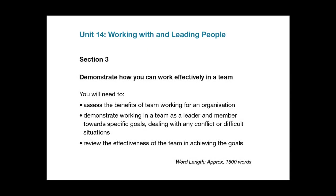Section three is looking at teams and team working. Bullet point one is fairly straightforward. Bullet point two is more complicated because you have several things to consider: looking at team working from the perspective of a team leader and how that might differ from the perspective of a team member, and if you were a team member, what team role or team roles you would adopt. You could then look at difficulties and conflict within a team, conflict resolution, and consider these issues from both the team leader's and the team member's point of view.